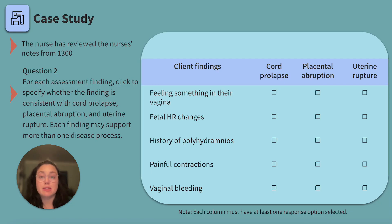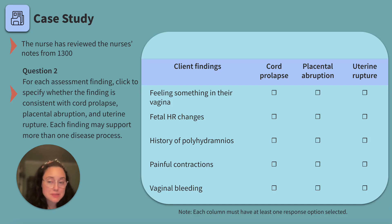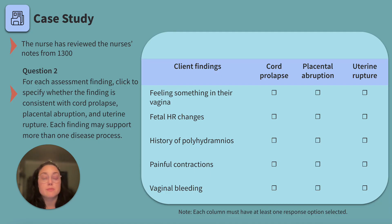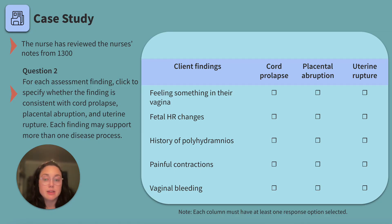For our next question, we'll analyze client findings to identify the emergent issue — a new next-gen NCLEX item format. For each finding, we'll specify whether it's consistent with cord prolapse — where the umbilical cord slips past the baby's head after membrane rupture — placental abruption — premature separation of the placenta from the uterine wall — or uterine rupture — complete separation of the uterine muscles. Each finding may support more than one condition.